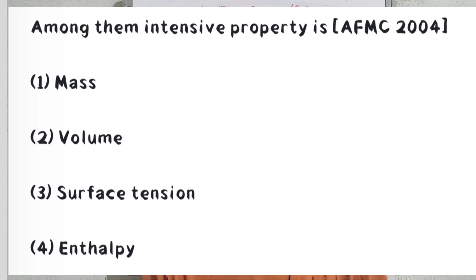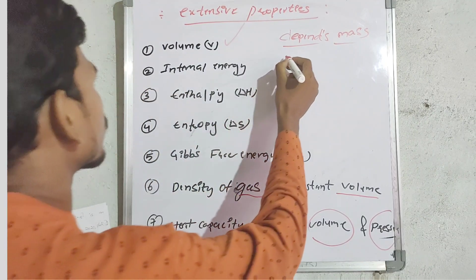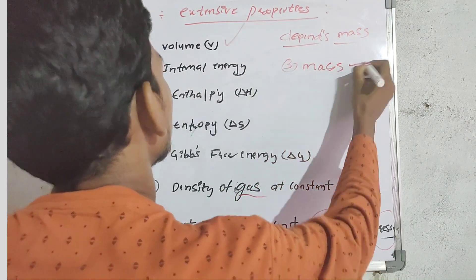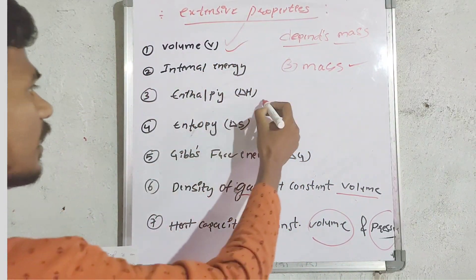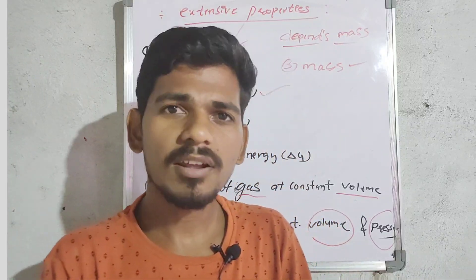AFMC 2004 question — practice this example. Options: A) Mass, B) Volume, C) Enthalpy, D) Surface tension. From our list, surface tension is an intensive property. Mass and volume are extensive properties, and enthalpy is also an extensive property. So the correct answer is option D — Surface tension, which is an intensive property.